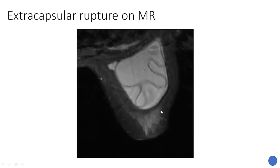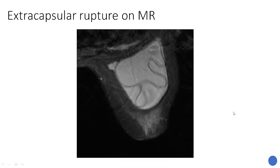Extracapsular rupture on MRI — you need an intracapsular rupture to have an extracapsular rupture. As you can see here, we have a linguine sign suggesting an intracapsular rupture, but also outside of the fibrous capsule — which is this very dark fibrous capsule — we see bright silicone outside of that, which was also dark on silicone suppressed sequences. So this is an example of an intra- and extracapsular silicone implant rupture on MRI.